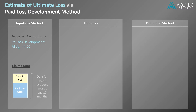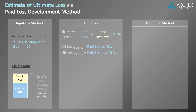One formula that will come in handy is the identity for ultimate loss: ultimate loss equals paid loss plus case reserves plus IBNR. The formula for estimated ultimate loss per the paid loss development method equals paid loss times the age-to-ultimate factor. For our example, the ultimate equals the paid loss at age 12 times the corresponding age-to-ultimate factor. This equals 100 times 4, or $400.